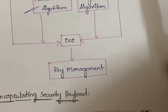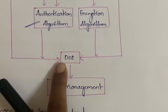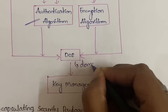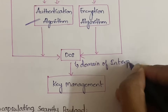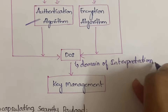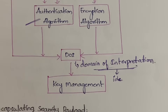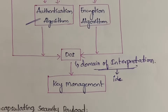Both AH and ESP are commonly connected to the DOI, which stands for Domain of Interpretation, and the DOI is connected to key management. The DOI will have the identifiers — or IDs — of all the approved authentication and encryption algorithms. According to the requirement, you can use the appropriate algorithm from there, and from the DOI it is connected to key management.